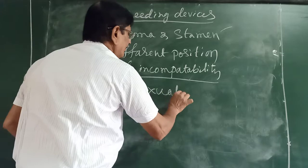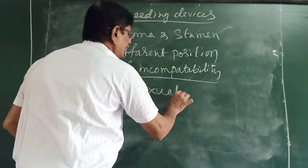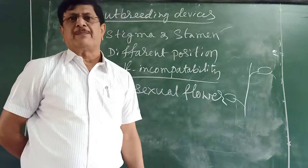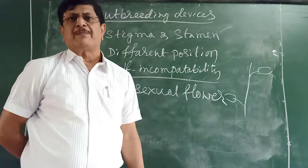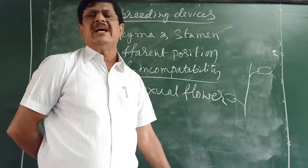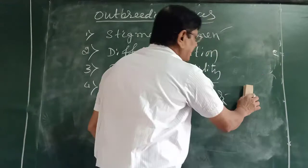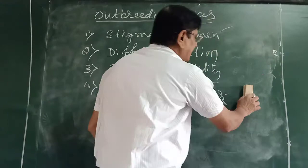Fourth outbreeding device: unisexual flowers. In bisexual plants, male flowers and female flowers are separate. The best example is the cucumber family or cucurbit family, where male and female flowers are separated as unisexual flowers. Similarly in coconut, male and female flowers are separated.